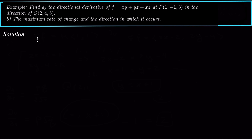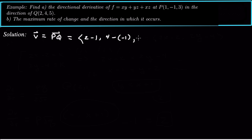The first thing we need to do is create a vector that goes from p to q. To get a vector from point p to point q, we take the coordinates of q and subtract the coordinates of p. So that's 2 minus 1, 4 minus negative 1, and 5 minus 3, giving us the vector (1, 5, 2).